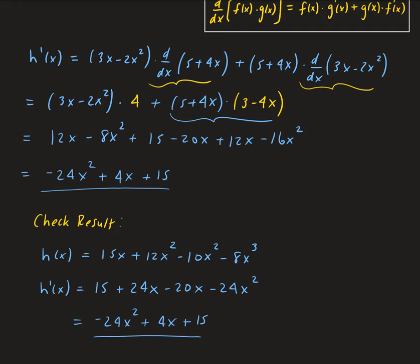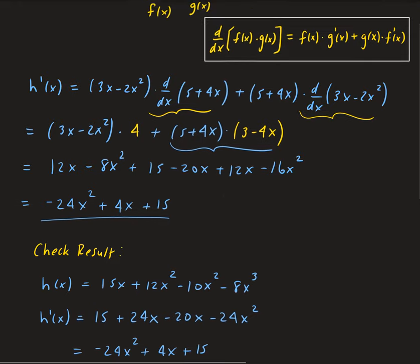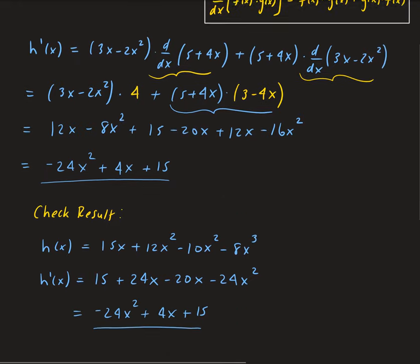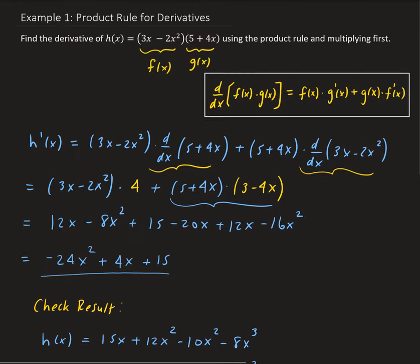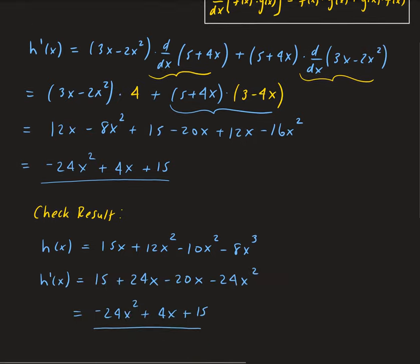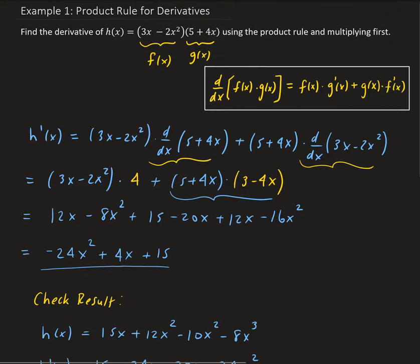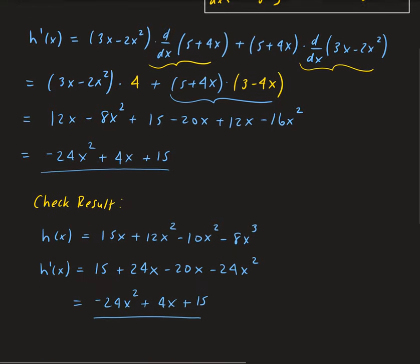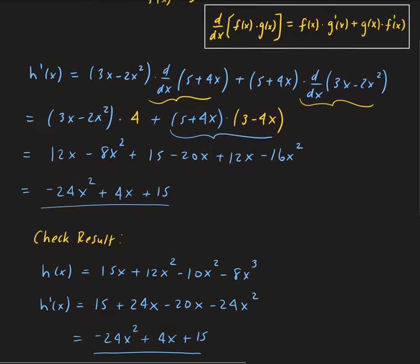So that is the derivative of h using two methods: the first method was using the product rule, and the second method was to expand everything out and then take the derivative term by term.